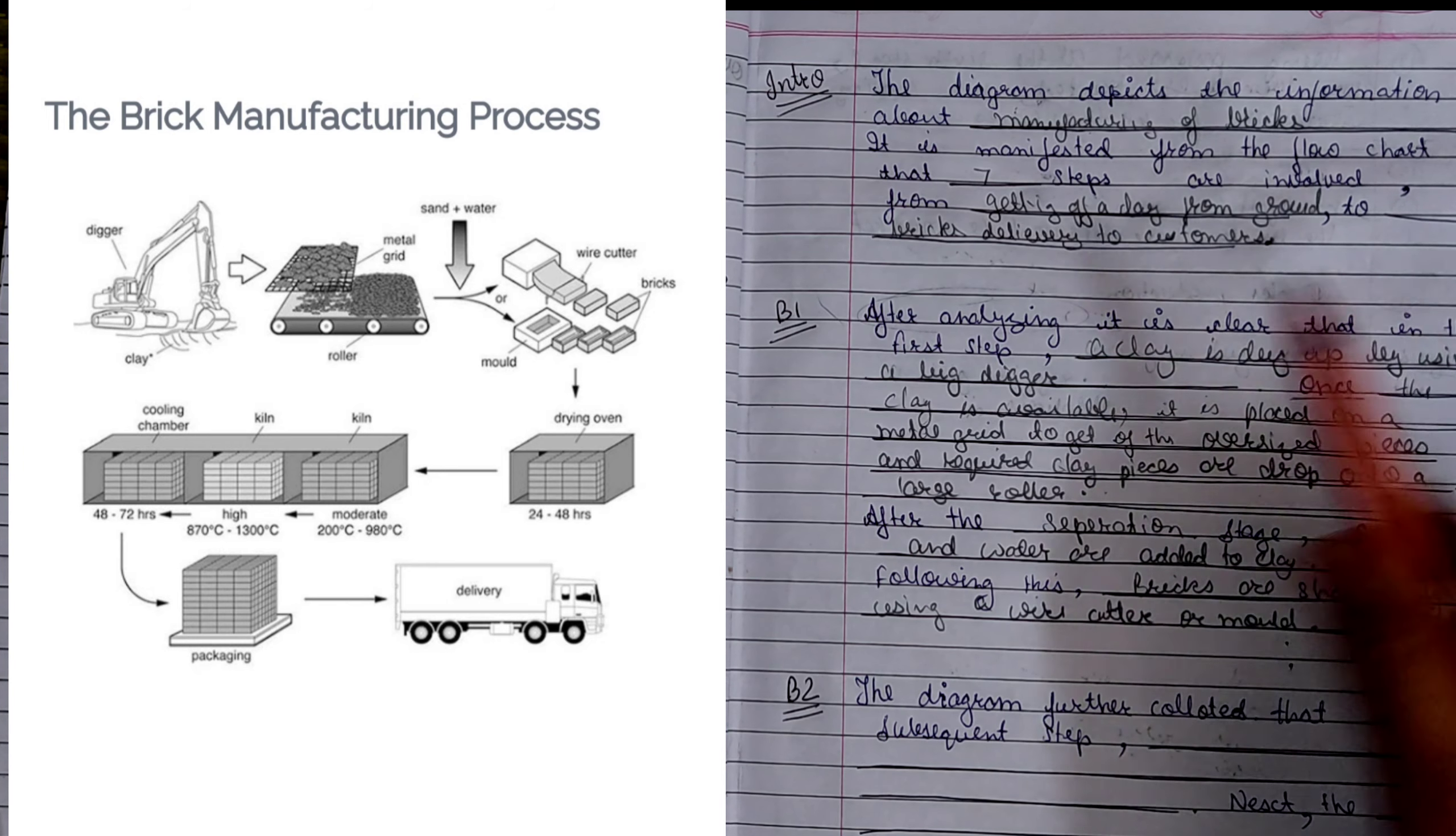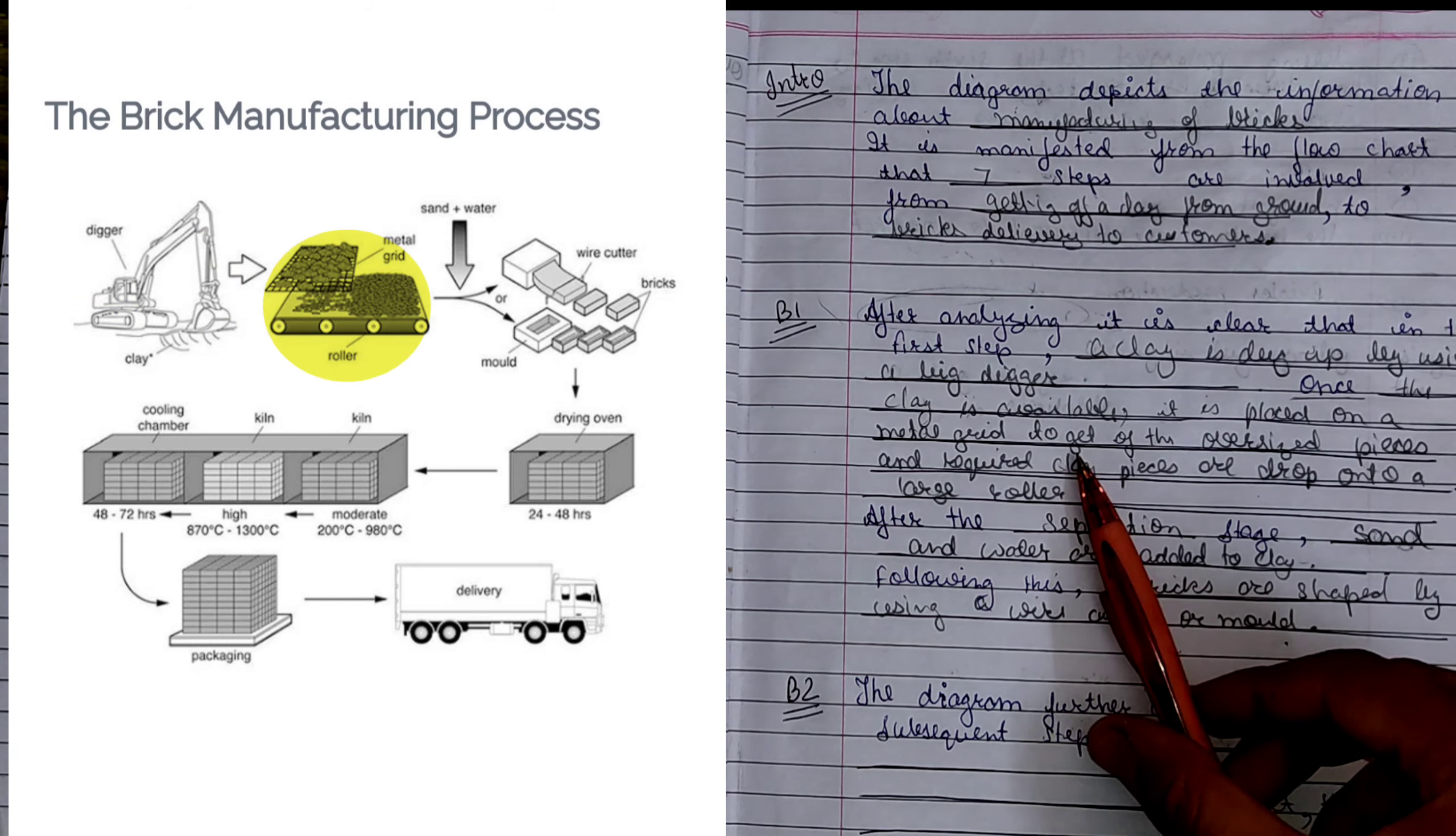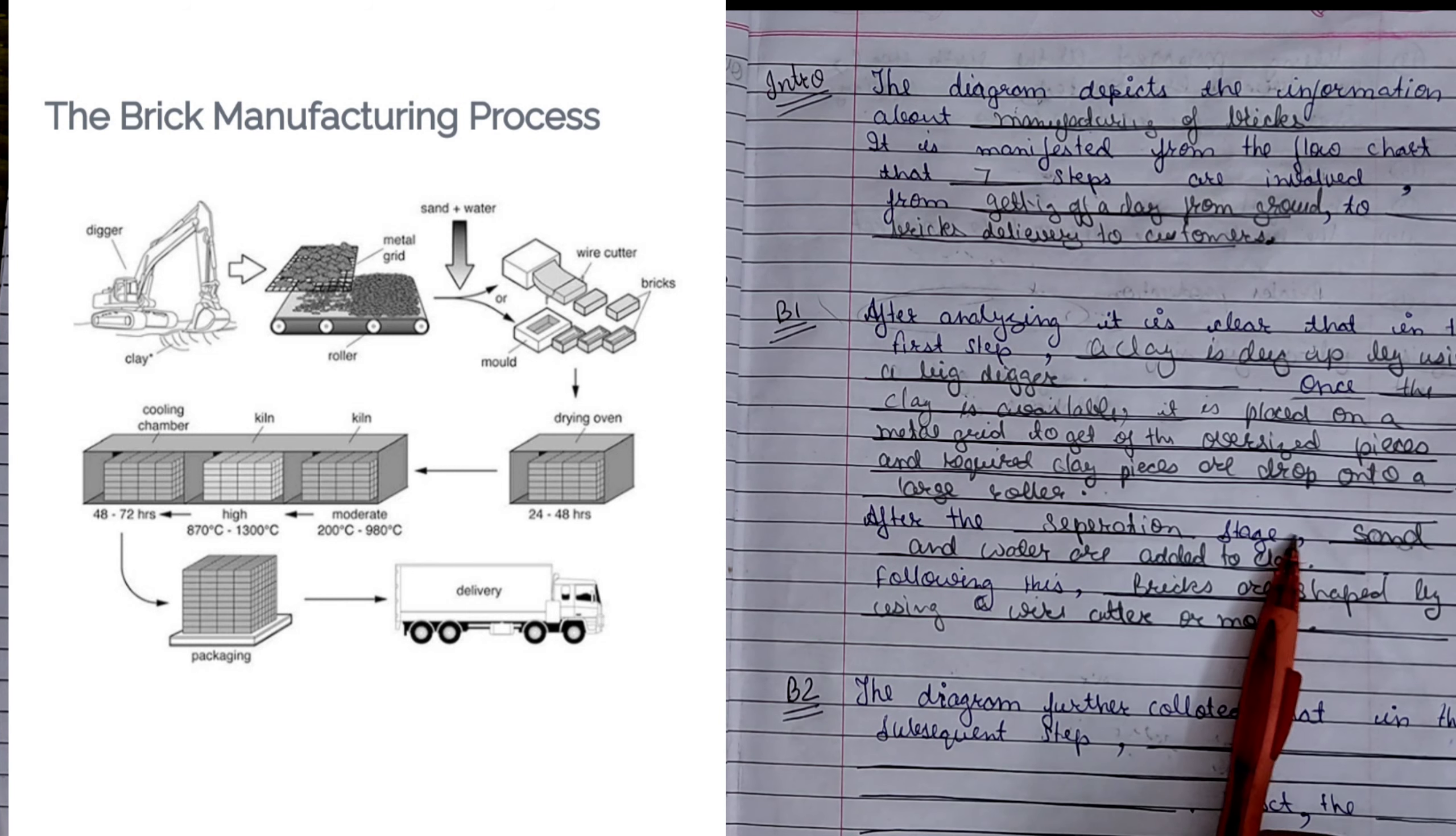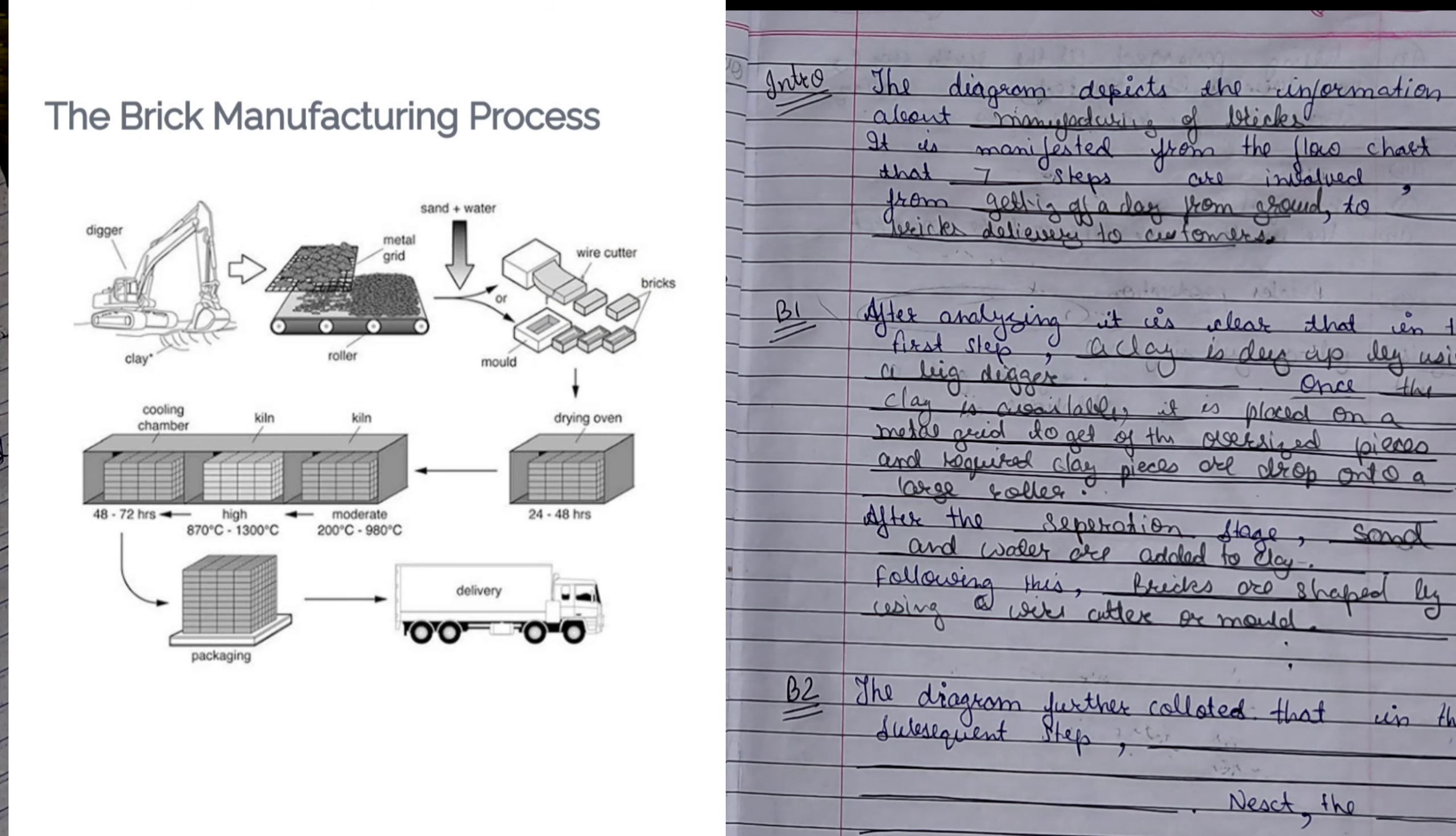After analyzing, it is clear that in the first step, a clay is dug up by using a big digger. Once the clay is available, it is placed on a metal grid to get rid of oversized pieces and required clay pieces are dropped into a large roller. After the separation stage, sand and water are added to clay. Following this, bricks are shaped by using wire cutter or mold. Let's move on to body paragraph 2.